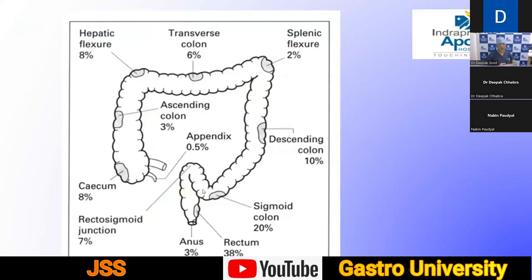Coming to the malignancy, it varies from area to area. The common site of the malignancy is the sigmoid and the rectum — the left side is the commonest site, almost 60%, with 20% sigmoid and 38% rectum. The main stay of the site of cancer is the rectosigmoid at almost 50 to 60%, and the rest is divided equally — 10% in the descending and ascending colon and 6% in the transverse colon and flexures.